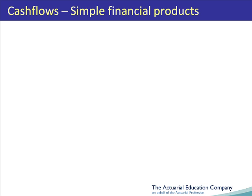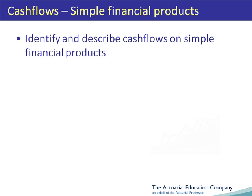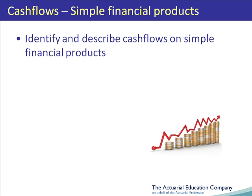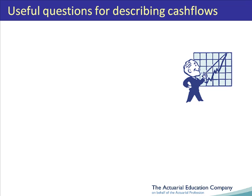In this unit, we'll develop a useful technique for identifying and describing the cash flows on simple financial products. We could just rote-learn the cash flows on each of the products covered in the course, but this is likely to be time-consuming, and we may find we struggle if the examiners introduce a different product and want us to apply our knowledge. So, as an alternative, we've come up with a list of seven questions to ask, which will draw out the key information on cash flows that we need for the exam.